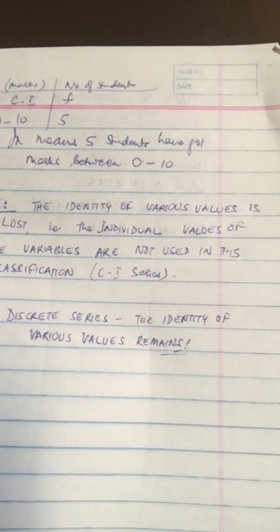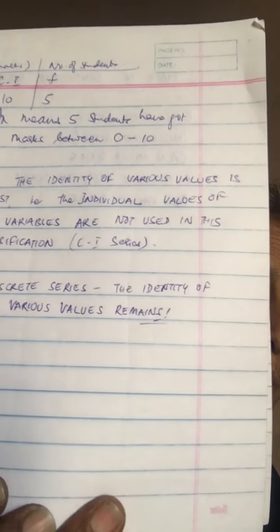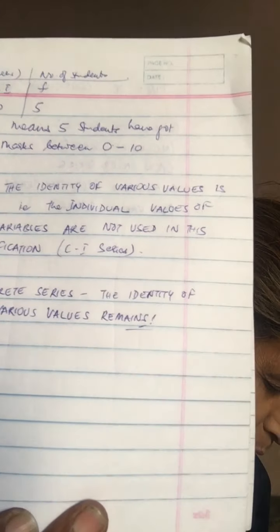For example, if suppose 0 to 10 class, 0 to 10 marks have been obtained by 5 students, we just put it down there.